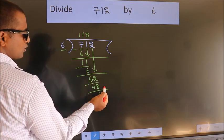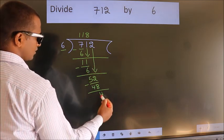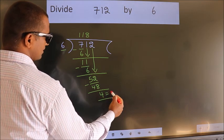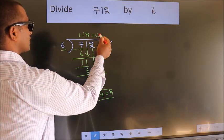No more numbers to bring it down. So we stop here. This is our remainder. This is our quotient.